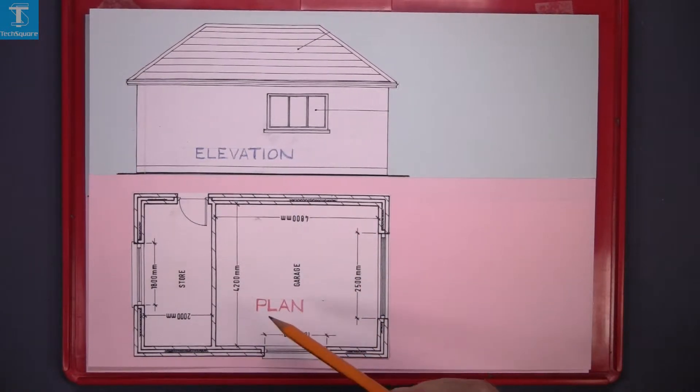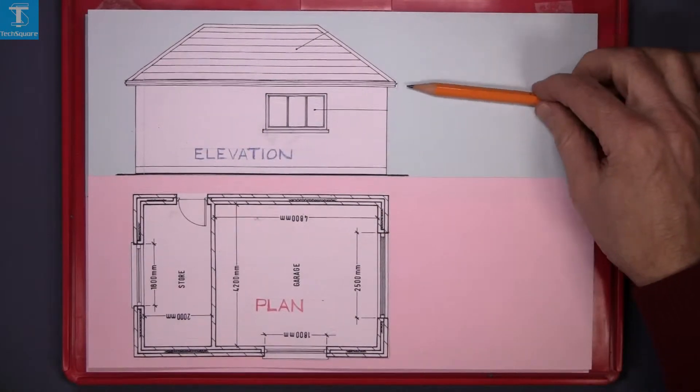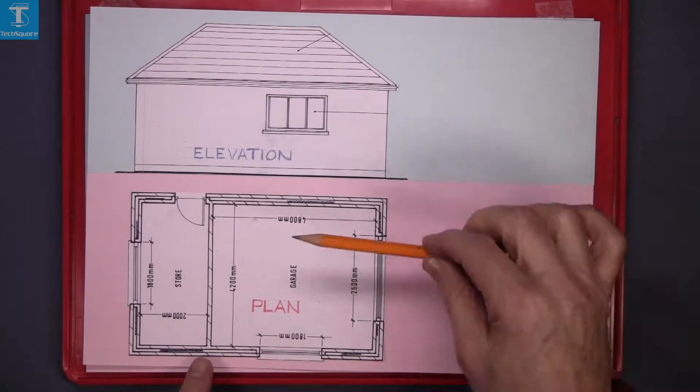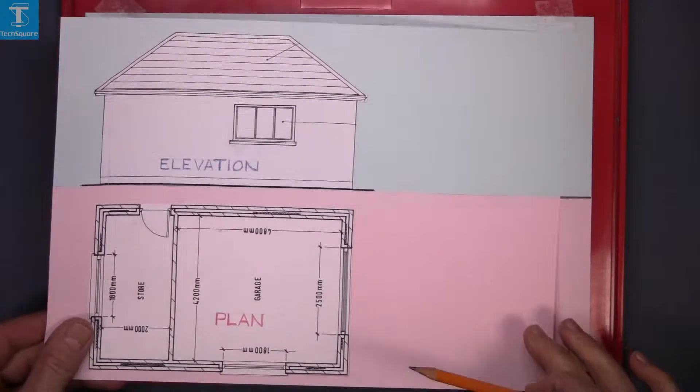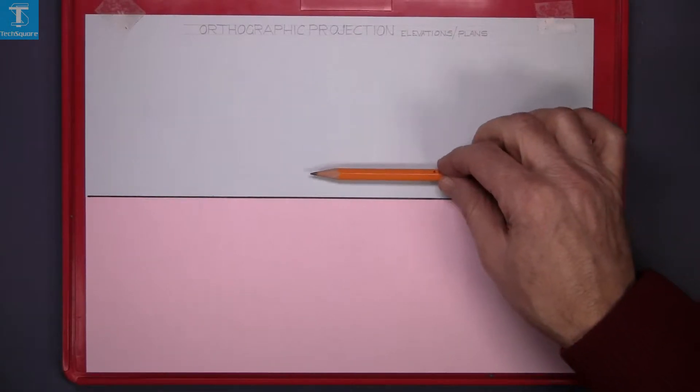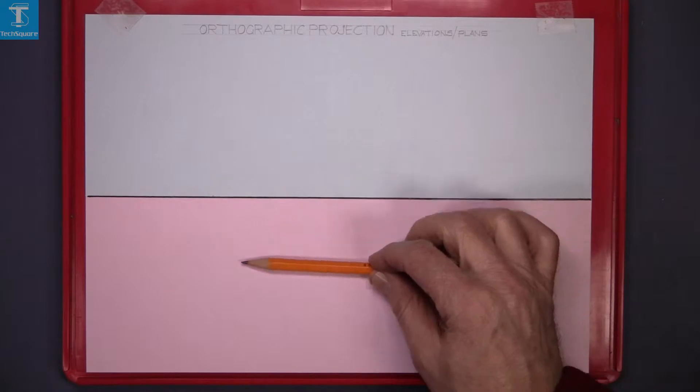The plan is looking directly down on it. The elevation will be drawn on the blue section of paper and the plan on the pink section. The elevation is going to be on this section here and the plan on the pink section here.